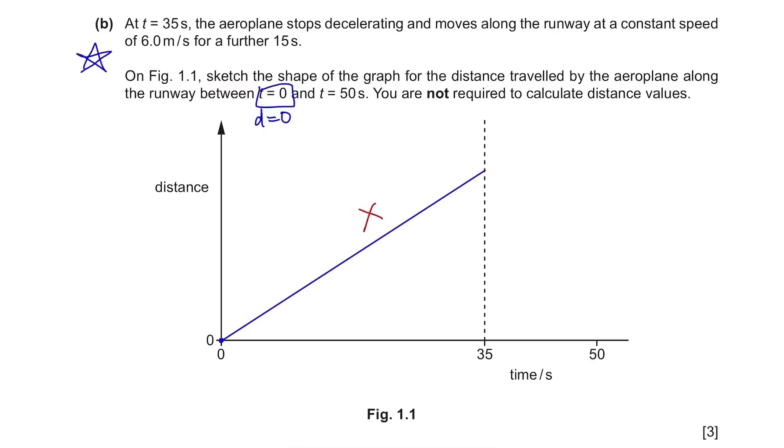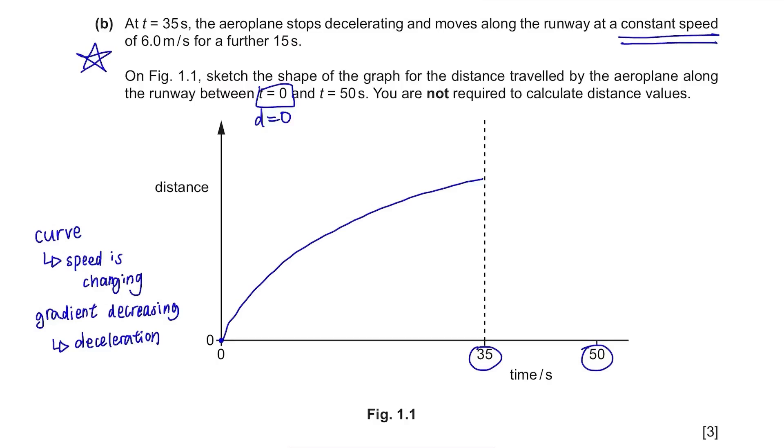Also, it was a deceleration so the gradient will be decreasing in this way. Next, it's from 35 seconds to 50 seconds. The question said it moved at a constant speed of 6 m per second. Since there was no change in speed, it would be a straight line and the distance would increase since it kept on travelling. So this would be the final answer.